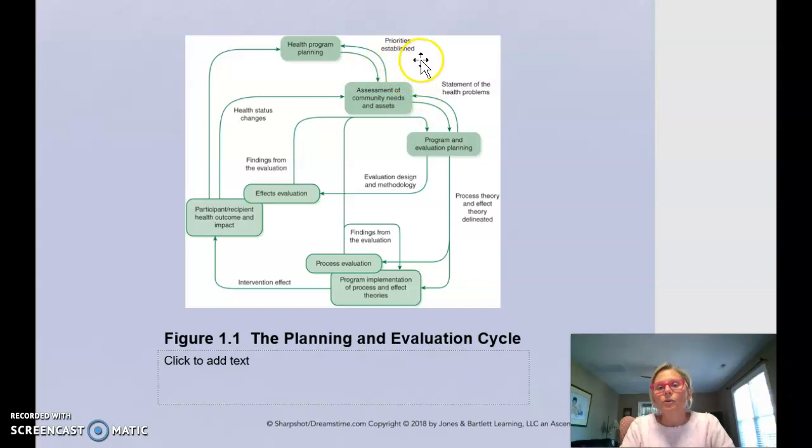Once that's done, we prioritize various health issues and then we begin our planning process. The arrows also go this way because as part of the program planning, we also start evaluation planning, meaning we're going to figure out how we're going to design our evaluation because we have choices and the methodology which we're going to use so that eventually we can evaluate the effect of our program. So that's where we are in our planning cycle.